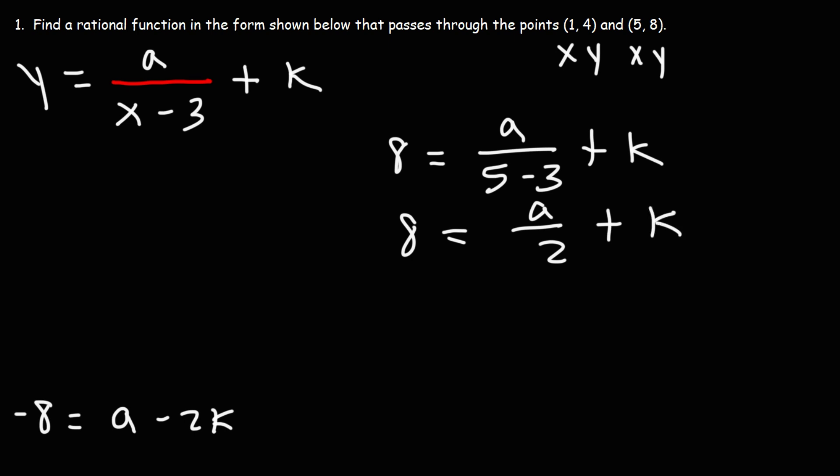Now we're going to do the same thing that we did before, but this time we're going to multiply everything by positive 2 instead of negative 2. So 2 times 8 is 16. 2 times a over 2, the 2s will cancel giving us just a. And then finally 2 times k is 2k. So here are the two equations that we have with the variables a and k.